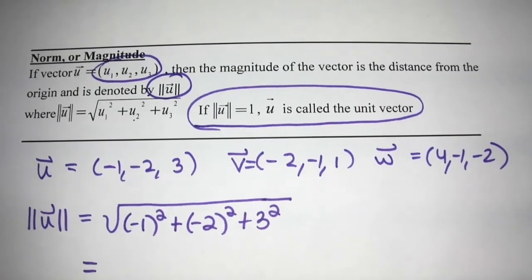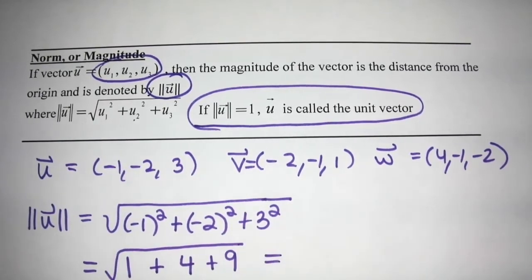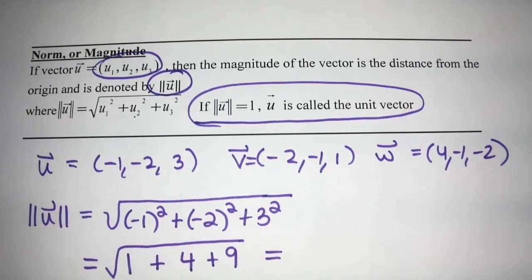So if we square negative one squared is positive one, negative two squared is positive four, and three squared is nine. And so we end up with root one plus four plus nine, so root 14. And that's the magnitude of U.